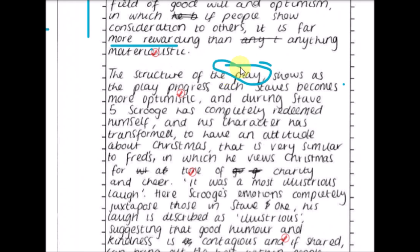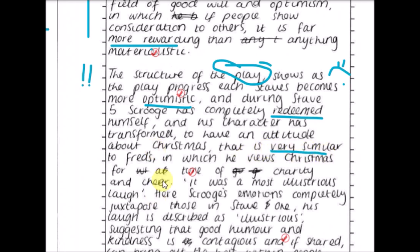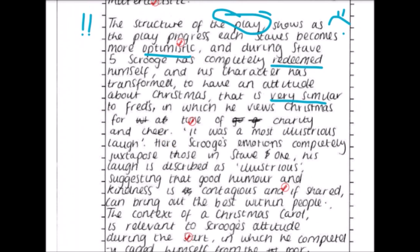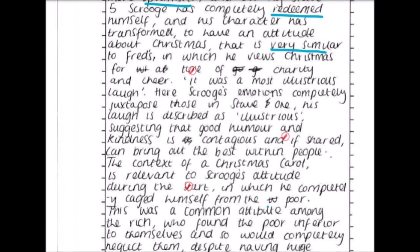Note: the student writes 'the structure of the play' — it should be 'novella.' A lot of students do that because they've just been writing about Inspector Calls, so bear that in mind. 'The structure of the novella shows that as it progresses each stave becomes more optimistic' — very true. During stave five Scrooge has completely redeemed himself and his character is transformed to have an attitude about Christmas very similar to Fred's: a time of charity and cheer.